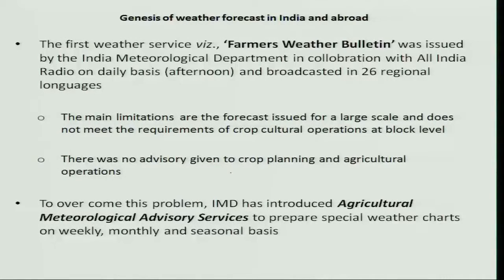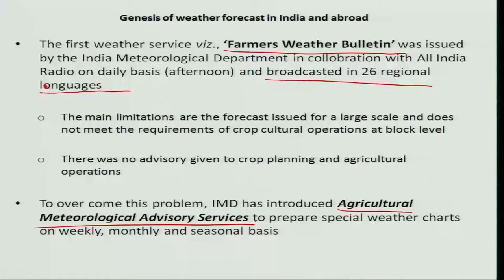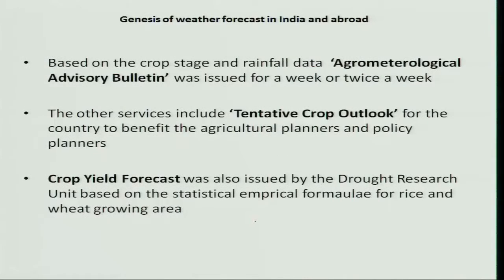The first weather service, namely the Farmer's Weather Bulletin, was issued by the India Meteorological Department in association with All India Radio, on a daily basis and broadcasted in 26 regional languages. The main limitation is that the forecast is issued for a large scale and does not meet the requirement of crop cultural operations at a local level, and no advisory was given for crop planning or agricultural operations. To overcome this, IMD introduced an agro-meteorological advisory service to prepare special weather charts on weekly, monthly, and seasonal basis, and also developed an agro-meteorological advisory bulletin issued once or twice a week.